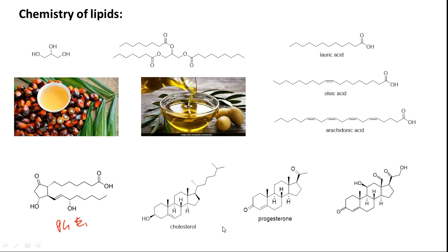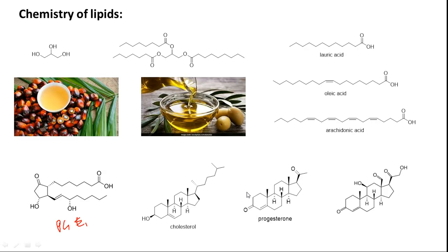From cholesterol, in our body, cholesterol is metabolized to give us different types of steroidal hormones, like progesterone and aldosterone. Aldosterone is actually a mineralocorticoid hormone. These hormones perform many important biological functions. We will be focusing more on fatty acids in the first part, and then cholesterol metabolism will be discussed in the latter part of our lectures.